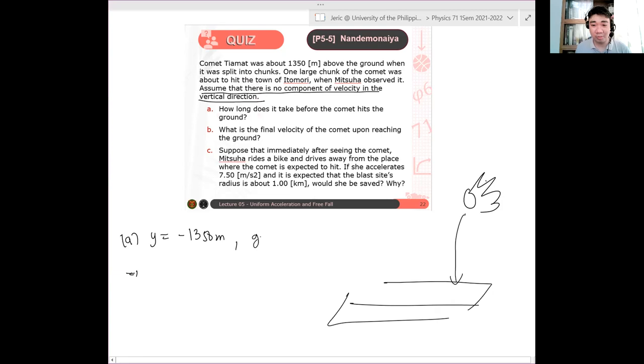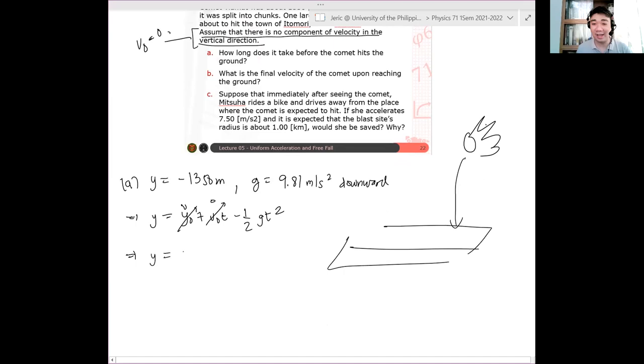So we have, what else do we have? We will assume that G is 9.81 meters per second squared downward. What is the initial velocity? Zero. Assume here that V naught equals zero. So here we have Y equals Y naught plus V naught T minus one half G T squared. This will vanish. This will vanish. I hope this one doesn't vanish. We will see in this problem if it works or not.